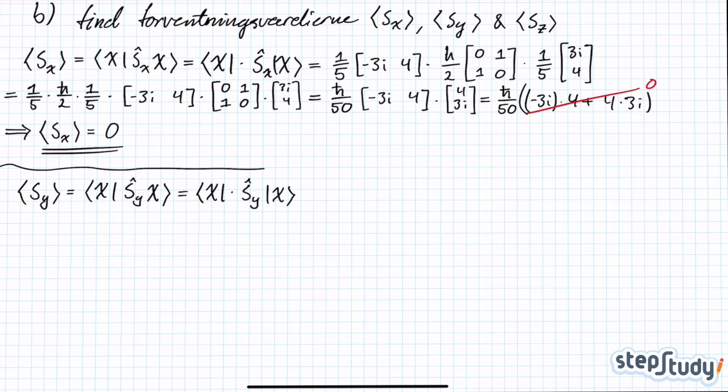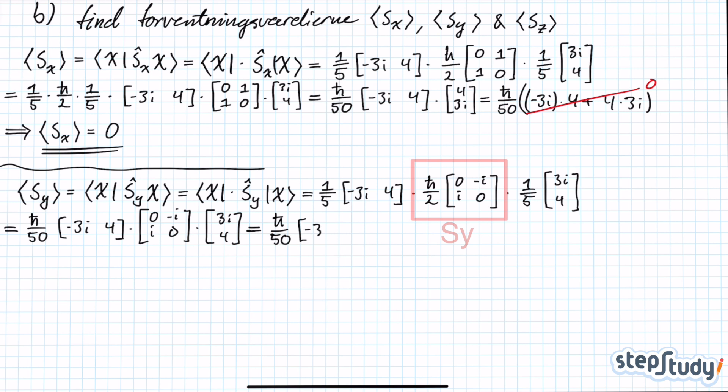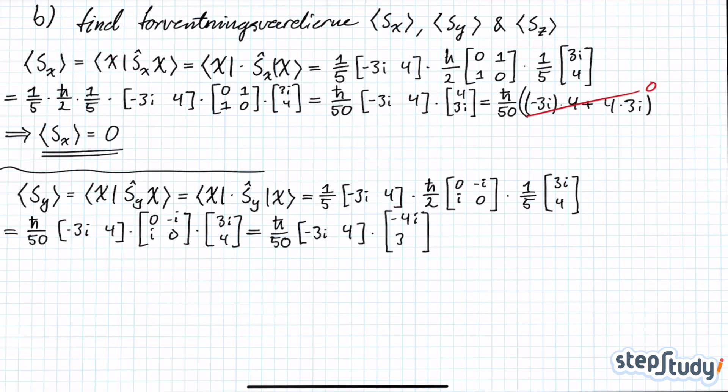So for the expected value of spin in the y-direction, you'll have the same method but just a different operator. The Sy operator is h-bar over 2 times the matrix 0, minus i, i, 0. Adding it all up, you'll find the expected value of spin in the y-direction to be minus 24 h-bar over 50.